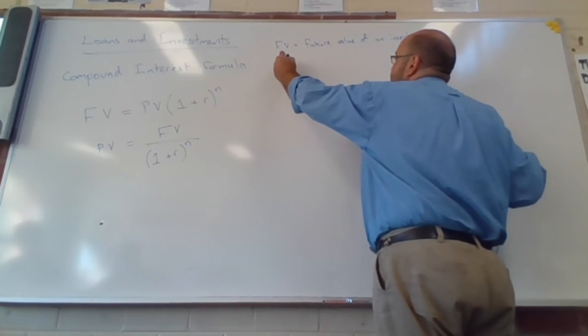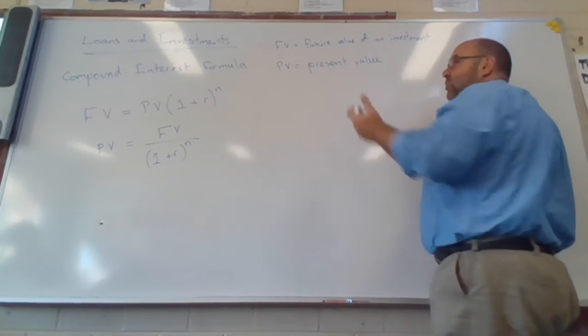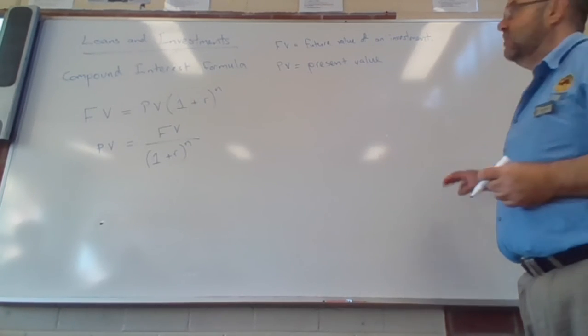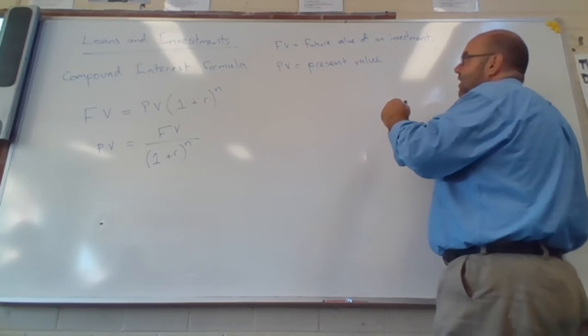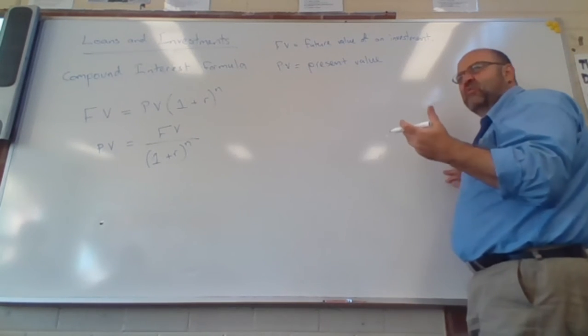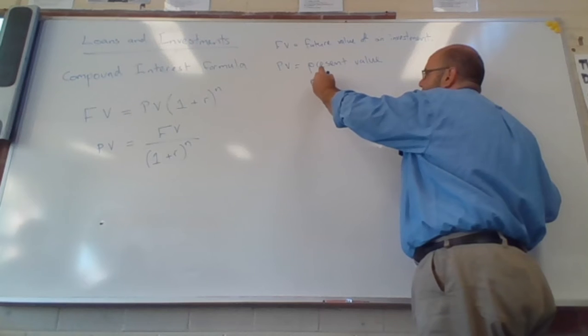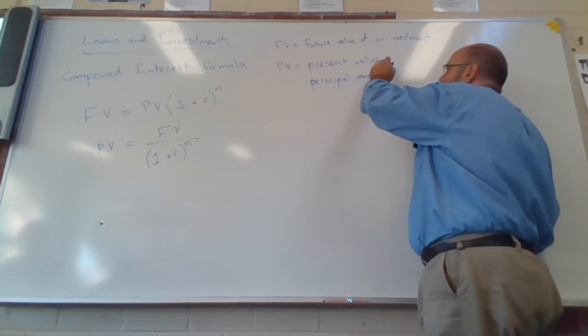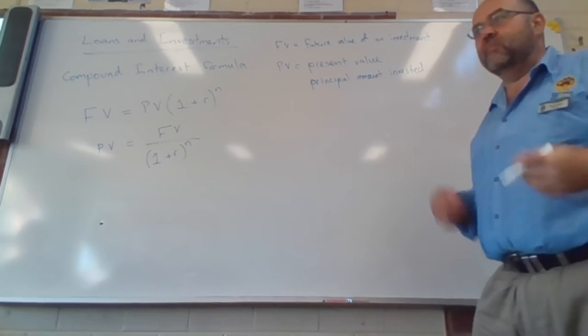PV is the present value. So what am I putting in now? Or what is it in today's dollars? It's also thought of another good way to think about this, and it's using a little bit of the older terminology for compound interest, is to say that PV also represents the principal amount invested. So the bit that you put up to start.